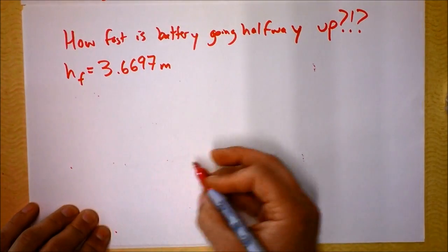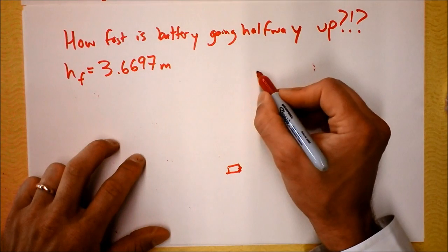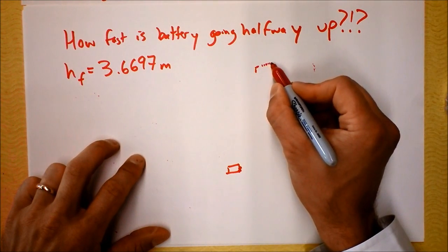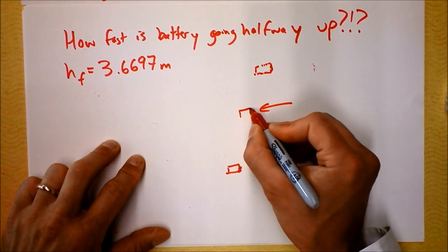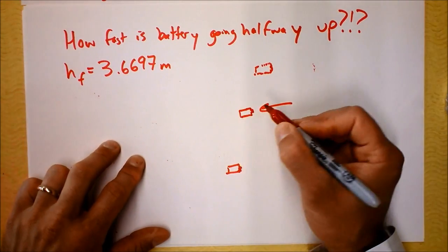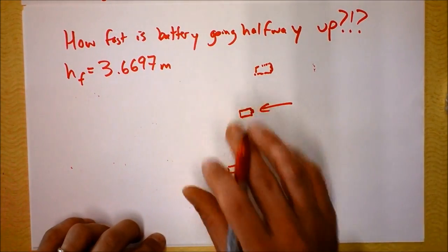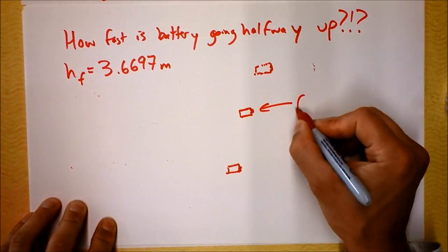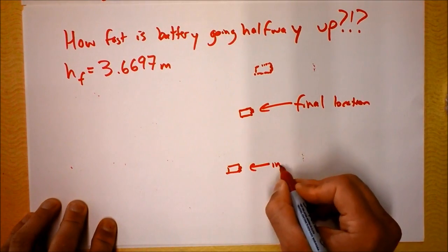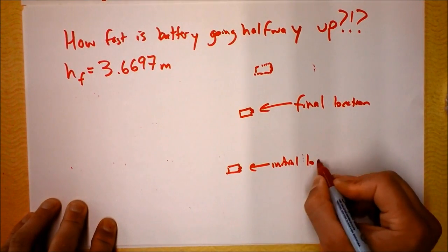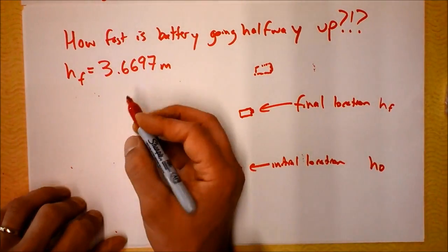So we know if the battery starts down here before Newton throws it, then it will ultimately reach up here, but I'm interested in the battery right here, this is the final. Do you think it's going half as fast as it was at the beginning? So let's say we're going to call this the final location and this the initial location.